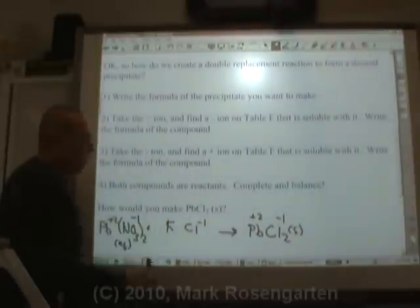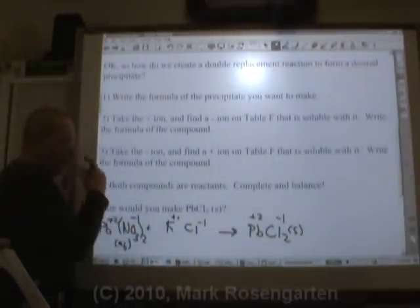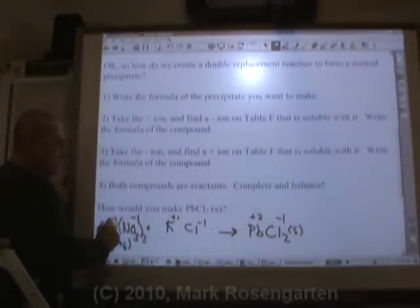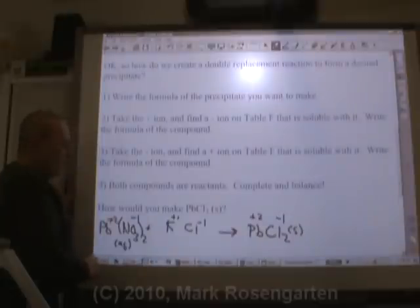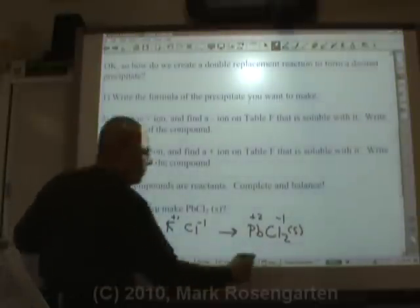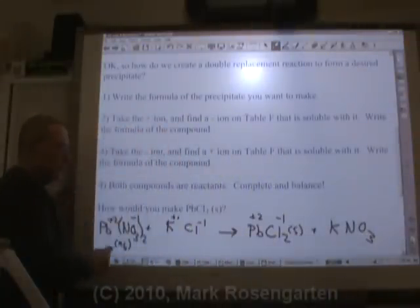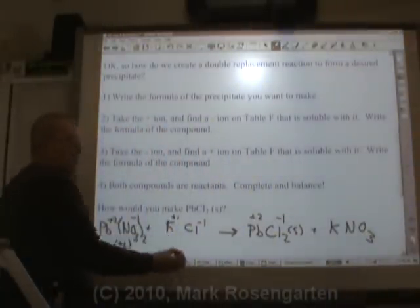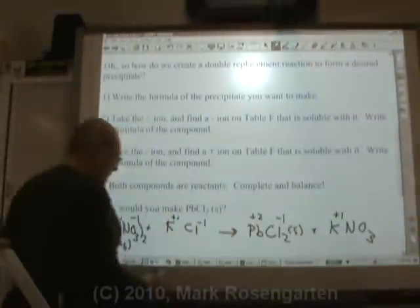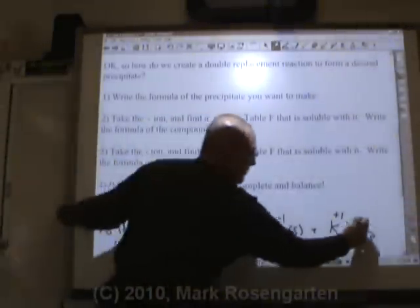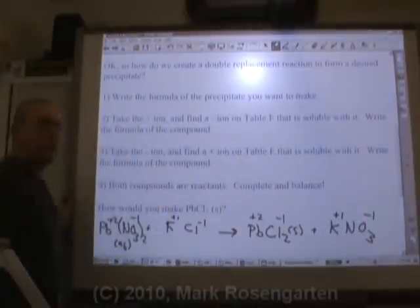K, like all group one metals, has a charge of plus one. So what will happen is not only will you make PbCl2, you'll also make K with NO3. And let's see, since the charges don't change, it's easy to find the formula. K is plus one. And nitrate is minus one. Beautiful, that's the formula.